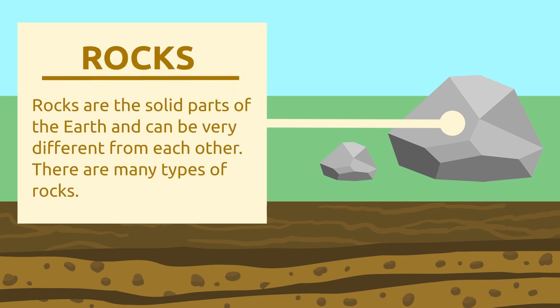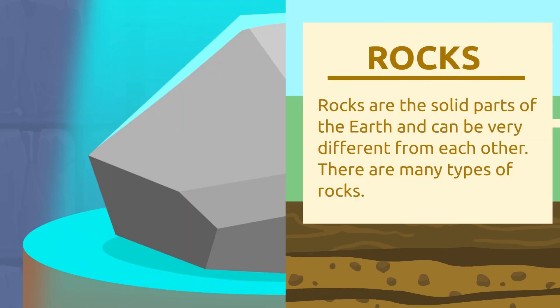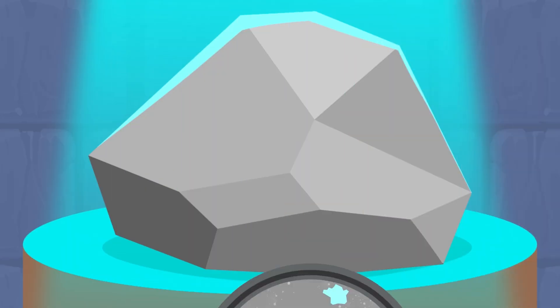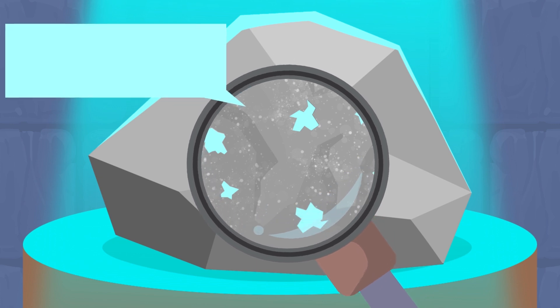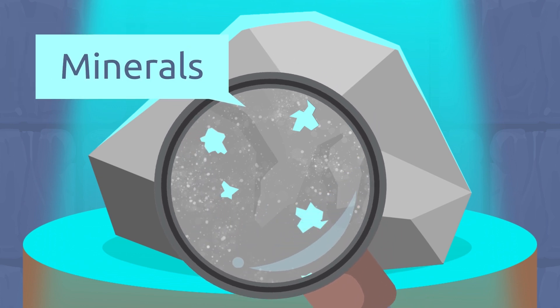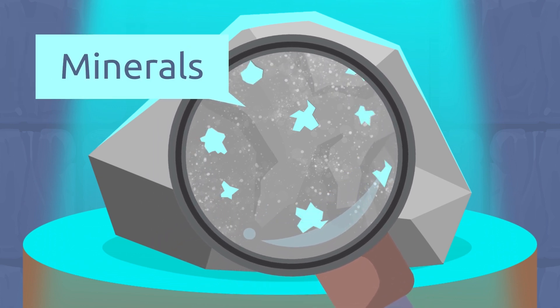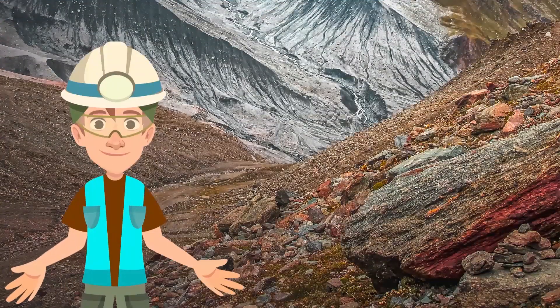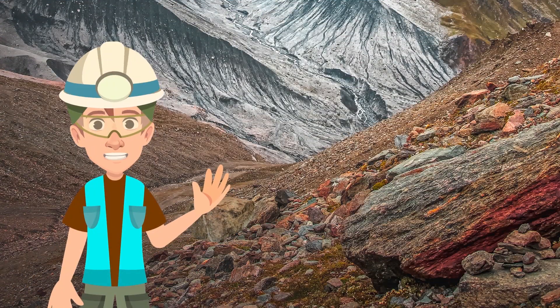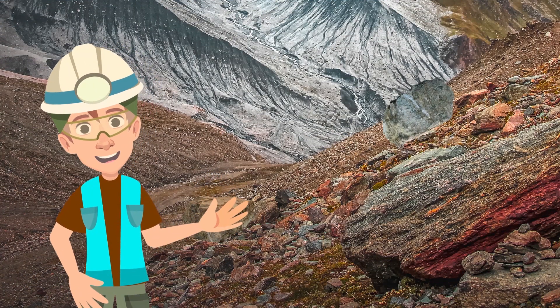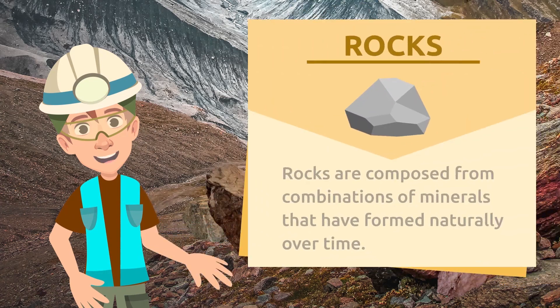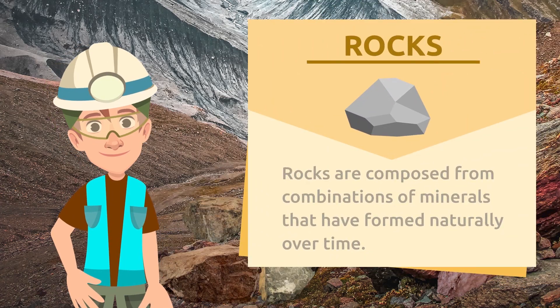Rocks are the solid parts of the earth and can be very different from each other. There are many types of rocks. We're going to use this magnifying glass to observe this rock. Can you see it's made up of different elements? That's right, my friend — those elements are called minerals, and all rocks are made up of them.